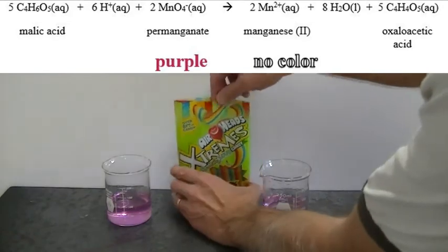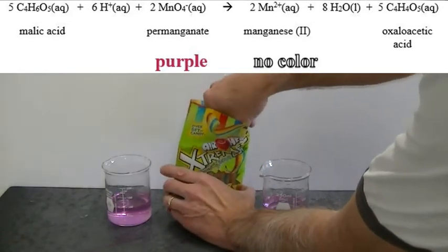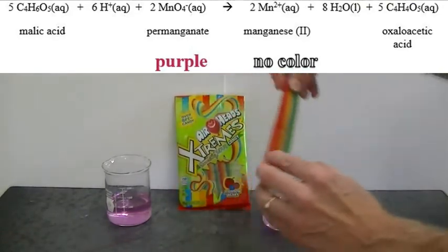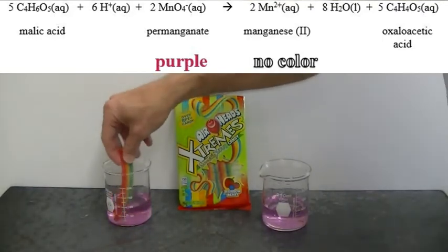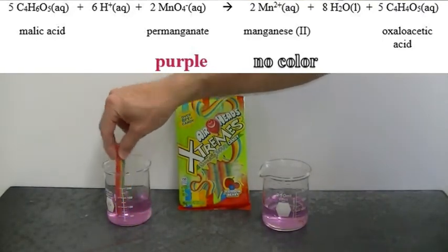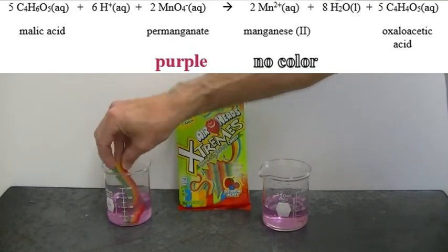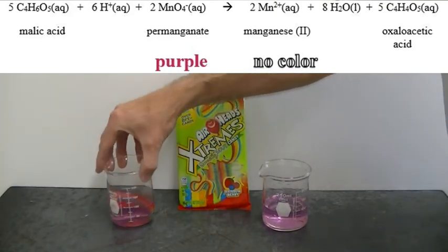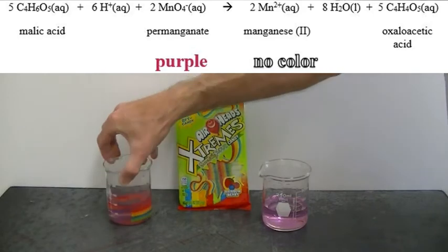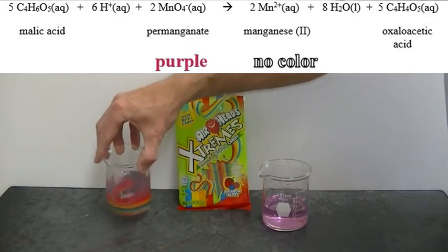Let's take out some of these candies and roll them around in the solution of potassium permanganate. If there is malic acid on the candy, it should change the color of the potassium permanganate to colorless.